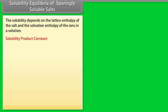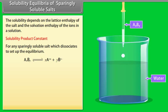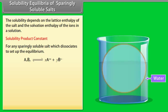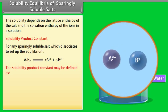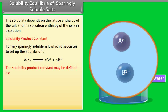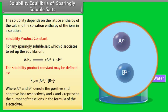Solubility product constant: For any sparingly soluble salt which dissociates to set up an equilibrium, the solubility product constant Ksp may be defined as [Aʸ⁺]ˣ × [Bˣ⁻]ʸ, where Aʸ⁺ and Bˣ⁻ denote the positive and negative ions respectively, and x and y represent the number of these ions in the formula of the electrolyte.